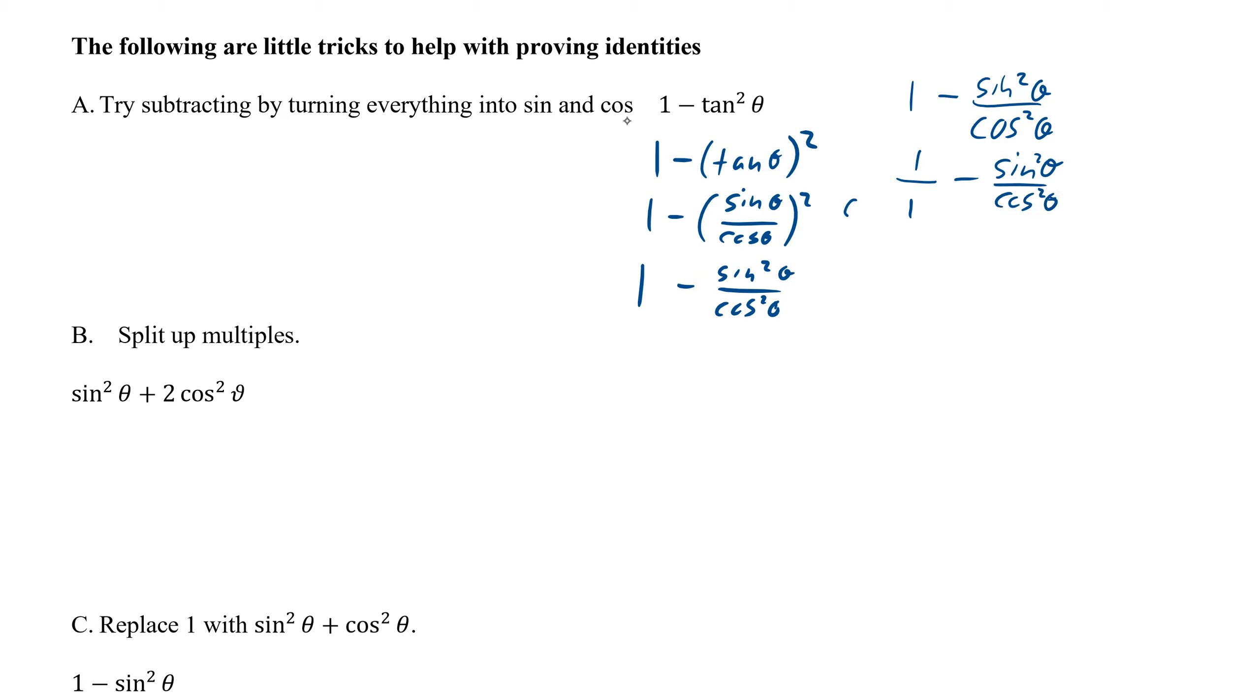This would then be multiplied top and bottom by cosine squared theta, and we end up with cosine squared theta minus sine squared theta all over cosine squared theta. Then we can now use Pythagorean identities on it and keep going from there. So it's another trick.